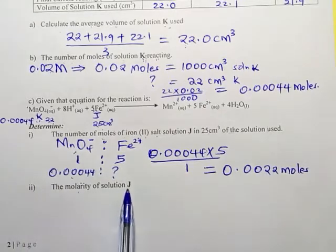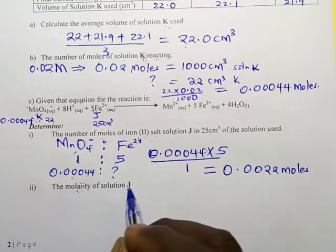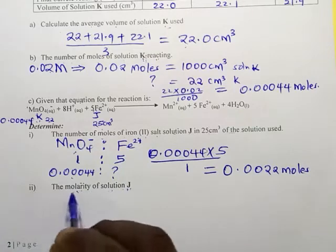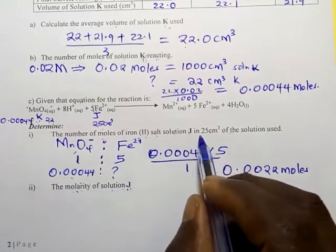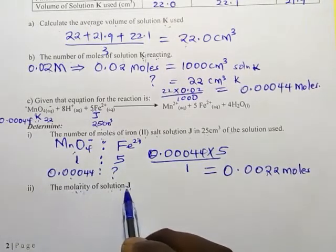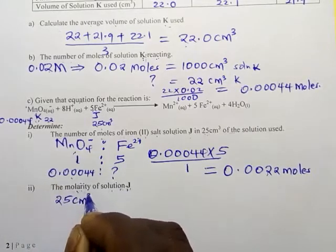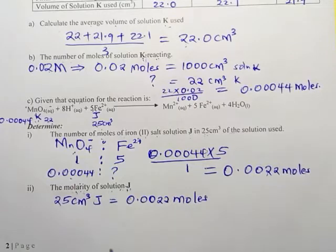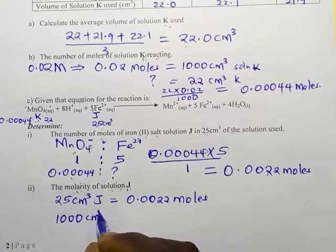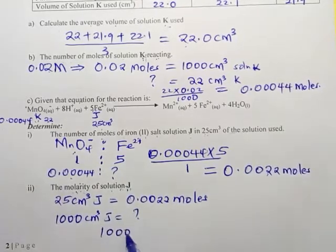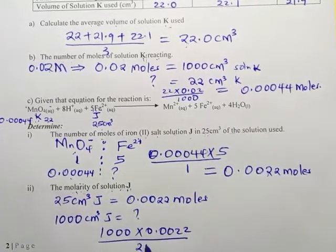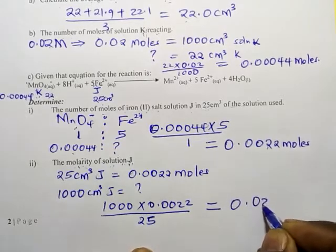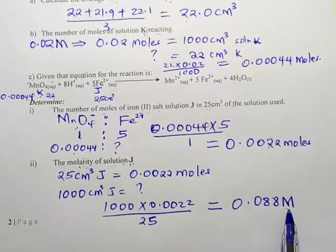Determine the molarity of Solution J. Molarity is the number of moles of a solution in one liter. We know moles of J in 25 cm³ = 0.0022 moles. So in 1000 cm³, Solution J contains 0.0022 × 1000 ÷ 25 = 0.088 moles per liter. That is the molarity of Solution J.